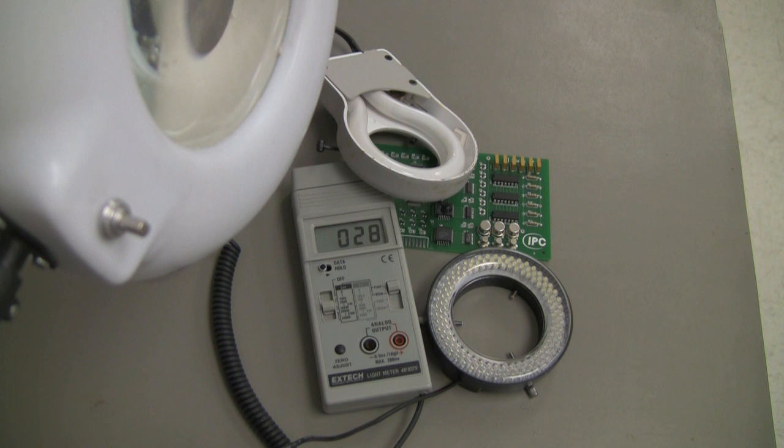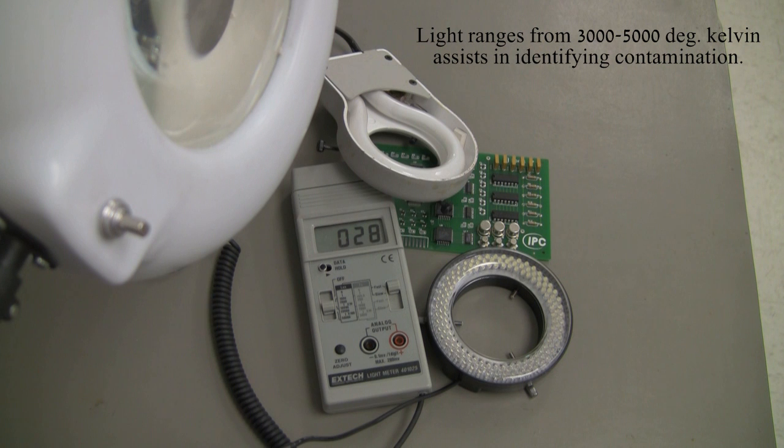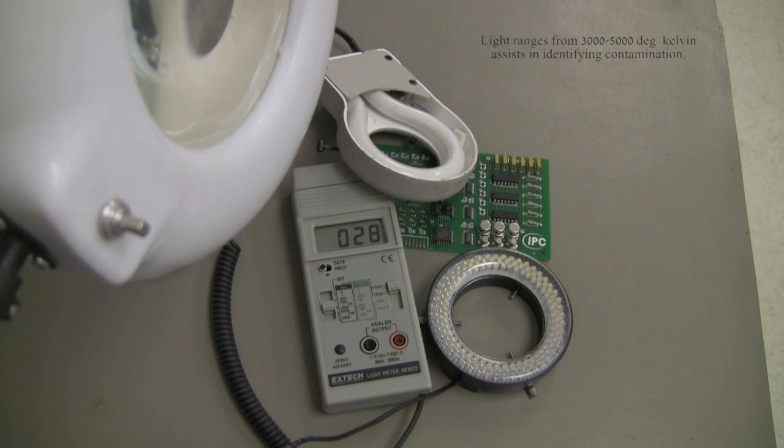We also have a note here that says in selecting a light source, the color temperature of the light is an important consideration. Light ranges from 3000 to 5000 Kelvin enable users to distinguish various printed circuit assembly features and contaminates with increased clarity. And again, that is in accordance with IPC J standard 001.